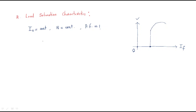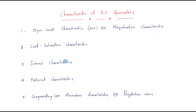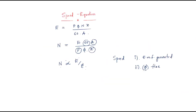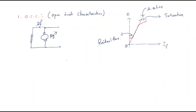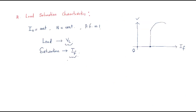To remember the load saturation curve: 'load' refers to load voltage VL, and 'saturation' refers to the field current reaching saturation. So the graph is load voltage versus field current. These are the speed equation and characteristics of DC generators — OCC and load saturation characteristics. I hope all of you understood the session, thank you.